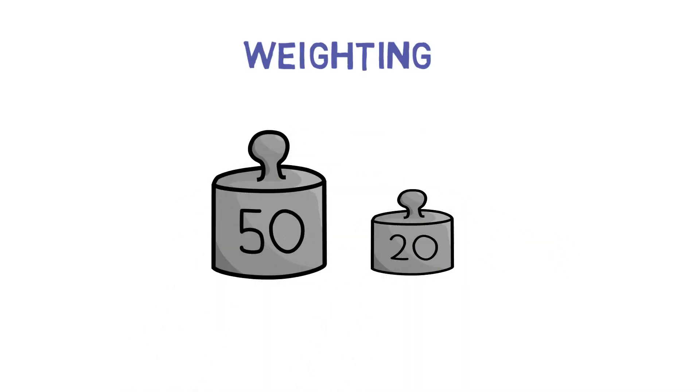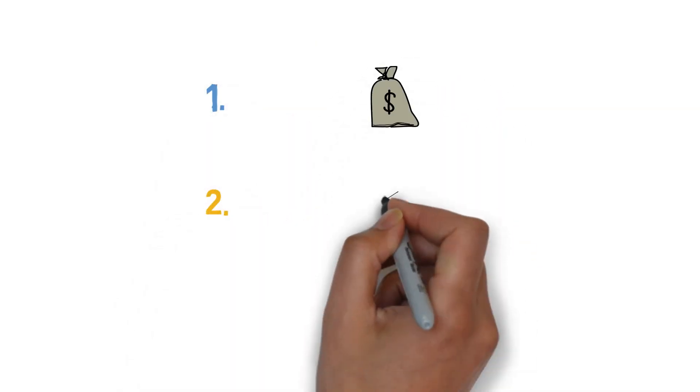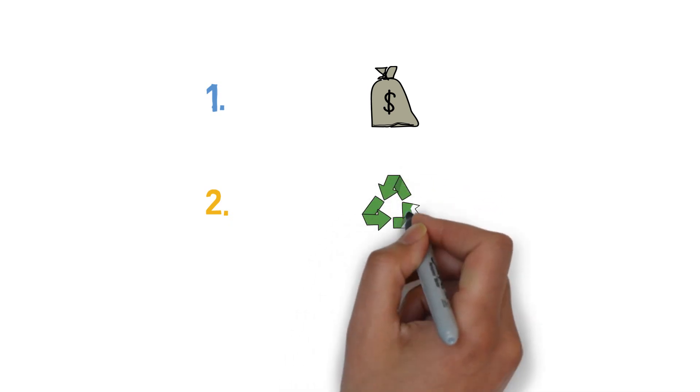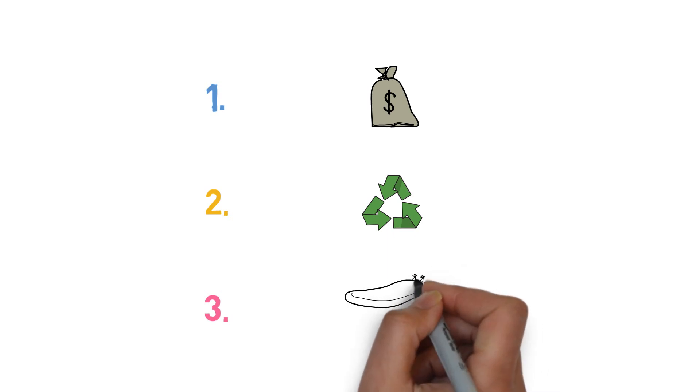The first thing to do when making a multi-criteria decision is to work out what objectives we have to meet, and then decide on how important each objective is by weighting it accordingly. We can then measure each option against these objectives.